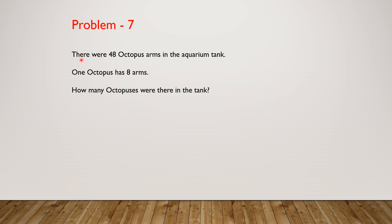There were 48 octopus arms in the aquarium tank. One octopus has 8 arms. How many octopuses were there in the tank?